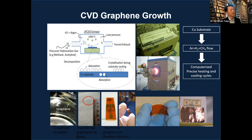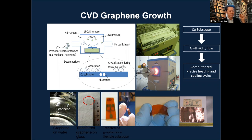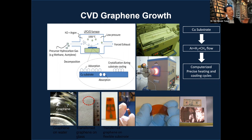To grow graphene, we send a precursor hydrocarbon gas along with carrier gases such as hydrogen and argon into a furnace heated to approximately 1000°C. On a copper foil substrate — copper has adequate carbon solubility — carbon atoms decompose from the precursor and adsorb onto the substrate. After adsorption, rapid cooling causes the adsorbed carbon atoms to crystallize into a honeycomb lattice, forming graphene. The copper is then etched, leaving graphene floating on water, which is scooped and transferred to any other substrate repeatedly.